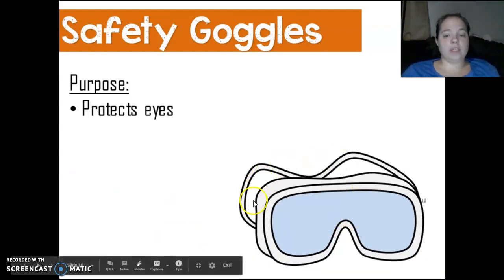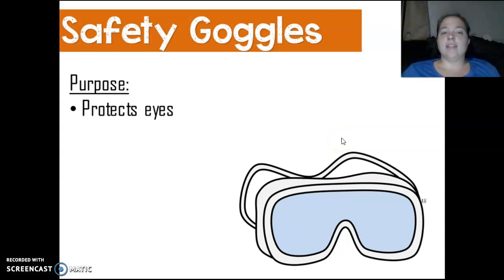All right. What are these things? These ugly, horrible things that everybody hates to wear because they do not look appealing at all. They are safety goggles. They protect your eyes from splash back and stuff like that. Very important. You always wear safety goggles in labs.